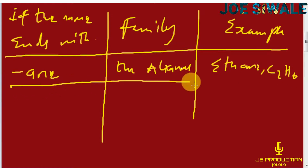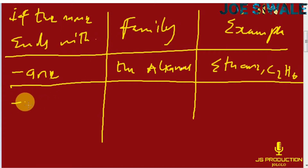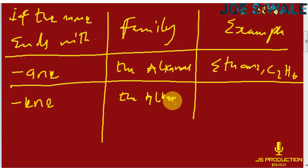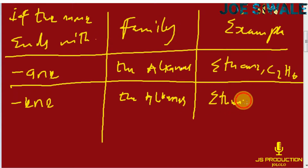If the name ends with -ENE, that means it belongs to the alkenes. An example is ethene, and the formula for ethene is C2H4.